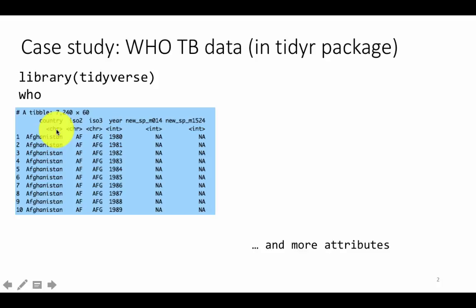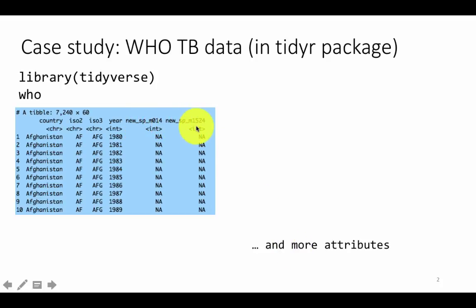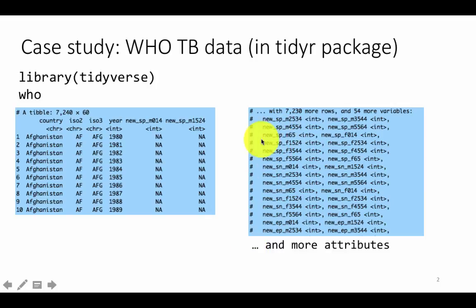So if you just type WHO, you get information. It shows you that WHO has data including country name, ISO two, and ISO three — those are alternate ways of representing a country. AF and Afghanistan: AF is a two-character abbreviation for a country, and AFG is a three-character abbreviation. And then you've got many other columns like new_SP_M014, new_SP_1524, and so on.